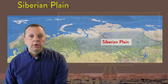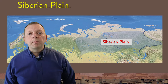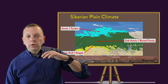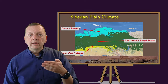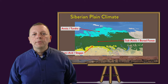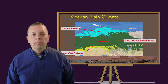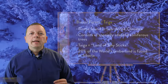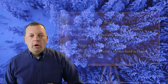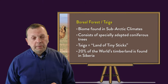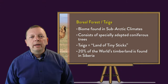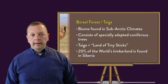As we continue eastward crossing the Urals, we are not only in Asia, but we find ourselves in the Siberian Plain. While we find the Arctic tundra in the northern portions of Siberia and the steppe grasslands in the south, one of the distinctive biomes we find in Siberia is the boreal forest. Boreal forests are made up of specially adapted coniferous trees that can survive the brutal winters of the sub-Arctic latitudes. The Russian term for these forests is taiga, which literally means 'land of tiny sticks.' The taiga of Siberia represents 20% of all the timberland in the world.